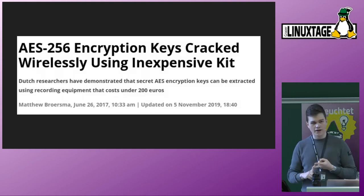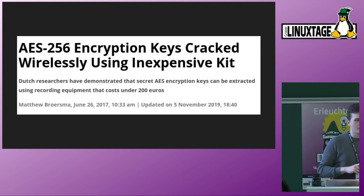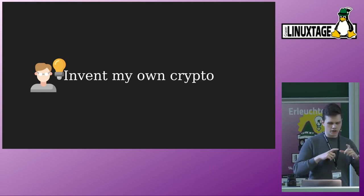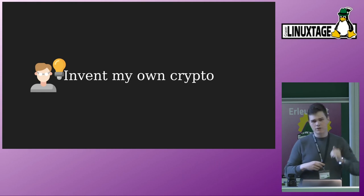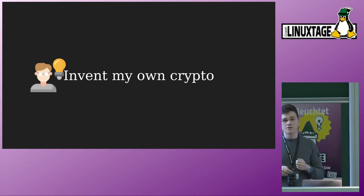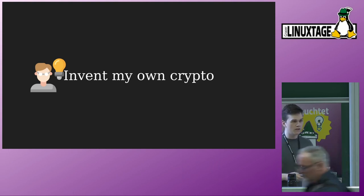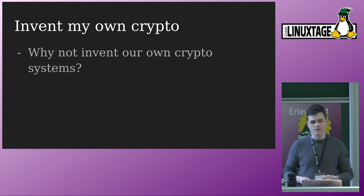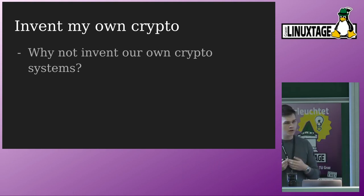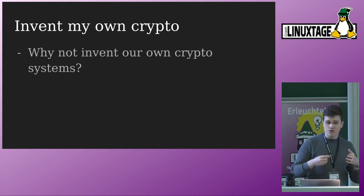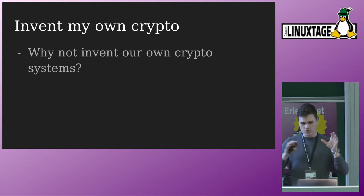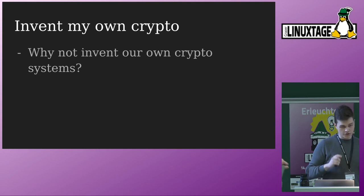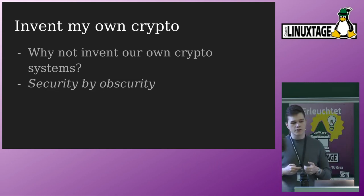If you aren't reading the news articles themselves, they most of the time get a bit more nuanced. But if you're just reading the headlines, you might come to the idea: well, I might invent my own crypto. If these systems aren't secure — at least that's what the headlines say — why shouldn't I invent my own cryptographic scheme? The idea sometimes being, if I'm scrambling my numbers around and only I know how I'm scrambling them, it's secure, right? This idea is also called security by obscurity.